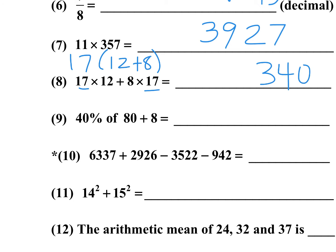Number 9: 40 percent of 80 plus 8. 40% of 80 — multiply 4 times 8, that's 32. Then 32 plus 8 is 40. The two zeros cancel with the percent division by 100, so you wind up with 4 times 8 equals 32, plus 8 equals 40.